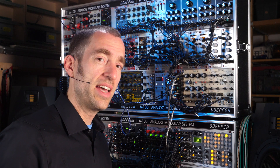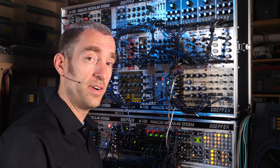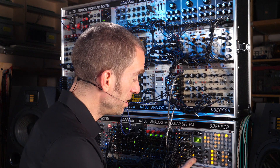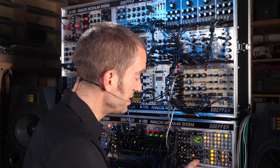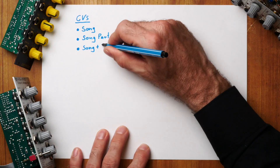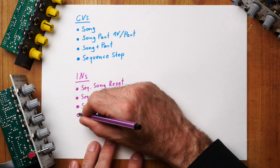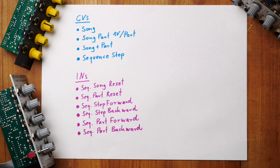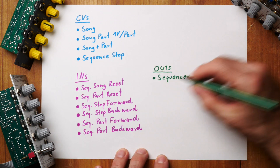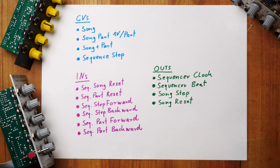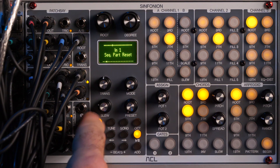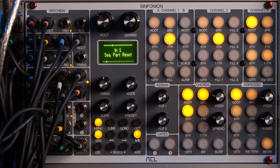The Sinfonion offers lots of functions for the CV in and out for the sequencer. I don't want to bore you with too many details since everything is explained in the manual — here is just an overview. The most important function is probably song reset or song part reset for inputs one or two. I use this always for starting the chord sequence at the beginning when I switch on my master clock.